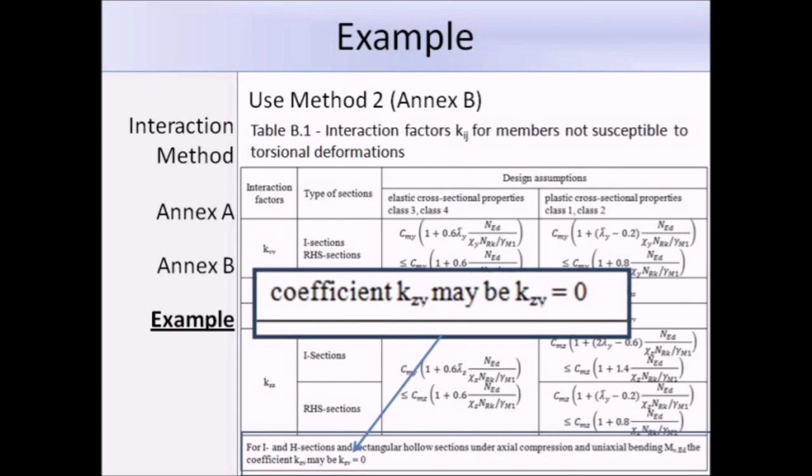For this example, we're going to use method 2, which refers to Annex B, because it is more suitable for manual calculations. We're using table B.1, because our member is not susceptible to torsional deformations. At the bottom here, we have the note saying that for I sections under axial compression and uniaxial bending MYED, the coefficient KZY may be equal to 0. That's good, because it means that we already have one interaction factor without having to do much work.